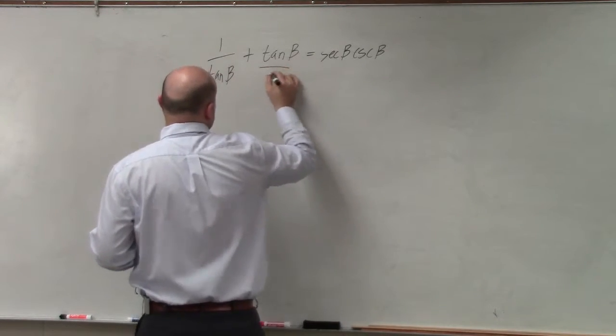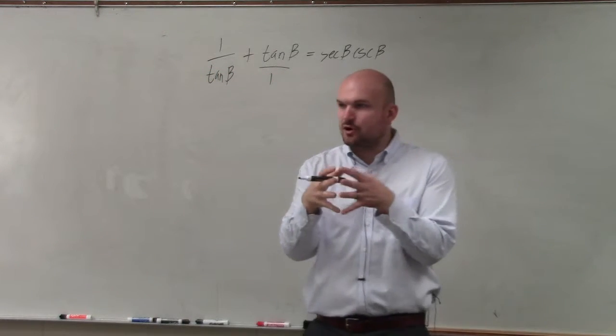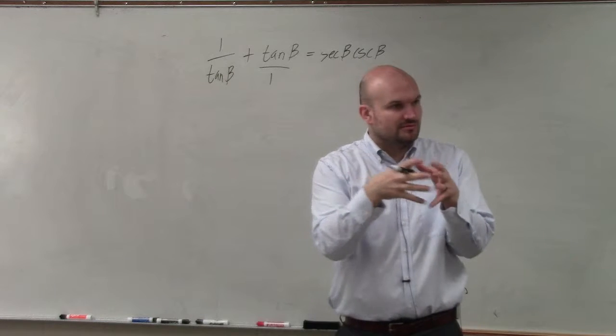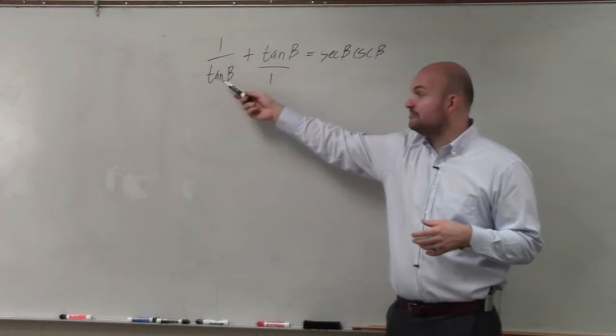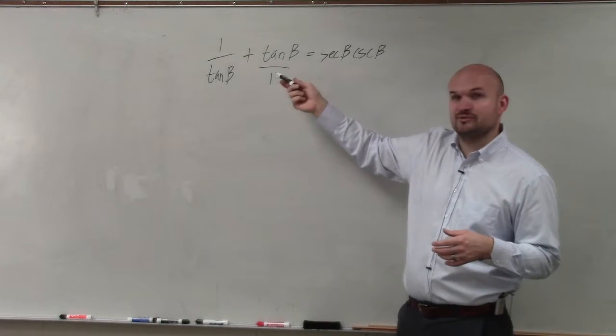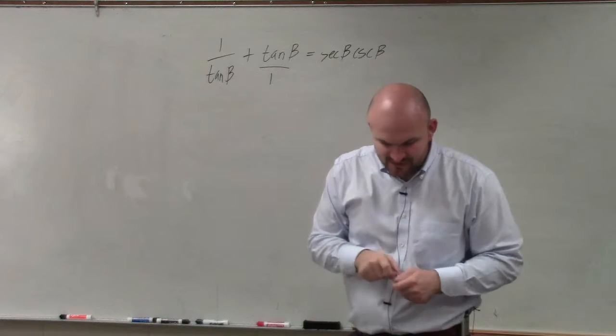So I do need to rewrite this as two fractions. Whenever you're adding a fraction to a whole number, you have to make sure they're written both in fractional form. When we're taking 1 over tangent of beta plus cotangent of beta, we got to make sure we write these both as fractions.